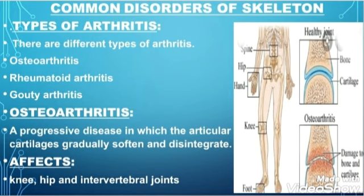There are three different types of arthritis: number one, osteoarthritis; number two, rheumatoid arthritis; number three, gouty arthritis. In osteoarthritis, the cartilage that covers the ends of bones at a joint becomes softened and then disintegrated. When this cartilage disintegrates, the two bones fuse and don't allow any type of movement, causing pain. It is a progressive disease in which the articular cartilage gradually softens and disintegrates. Regions affected include the knee, hip, and intervertebral joints. In the diagram you can see the difference between a healthy joint with cartilage and a joint with osteoarthritis in which cartilage and bone are damaged.